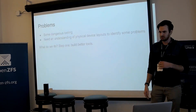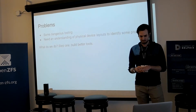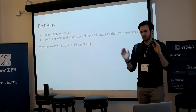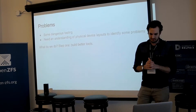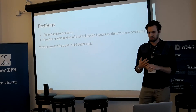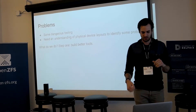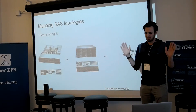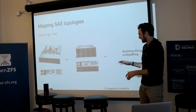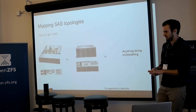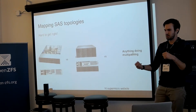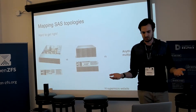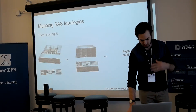The problems with understanding SAS topology and figuring out where errors are actually happening in hardware: we have super dangerous tooling — LSI util is extremely frightening to use. What we really need to do is understand physical device layouts so we can identify where things are going wrong. We need better tools. Multi-pathing folks probably have the most crazy SAS topologies on the planet. It's really hard to get this mapping of hardware topologies right, because there are just so many valid ways according to the SAS documentation, and it's really confusing even to picture in your mind.